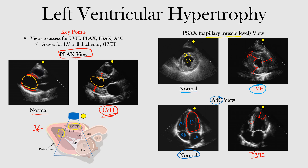Notice the walls are much thicker on the side showing left ventricular hypertrophy. The cavity is actually much bigger over here on the normal side compared to this region showing LVH. Notice the thickening of the left ventricular walls — that's what you're really looking for.